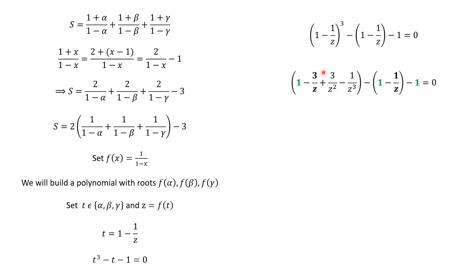And we can group the terms, negative 3 over Z, and 1 over Z, to have this. We now multiply by negative Z cubed, to have this. So, we know that F(alpha), F(beta), and F(gamma) are therefore the roots of these polynomials, because of this.